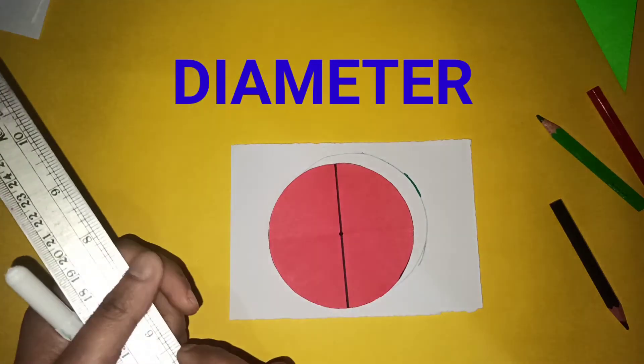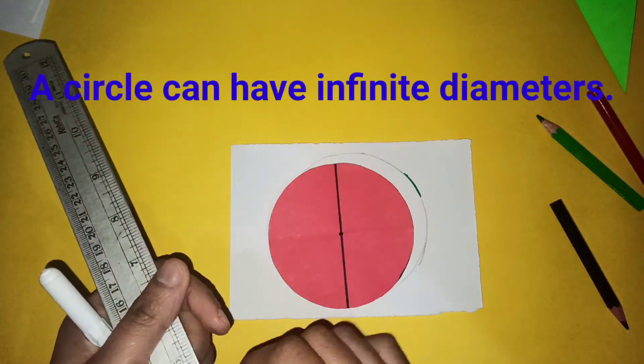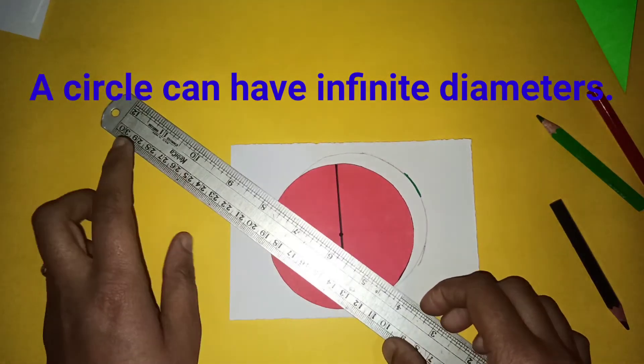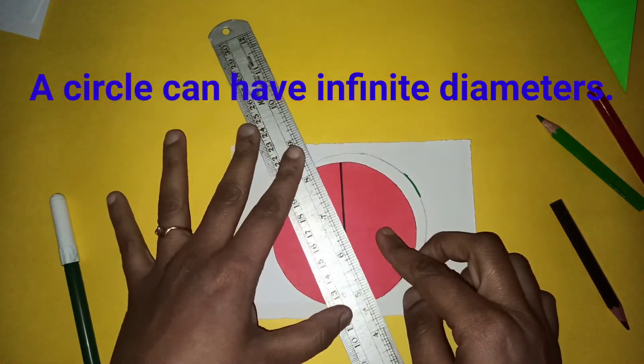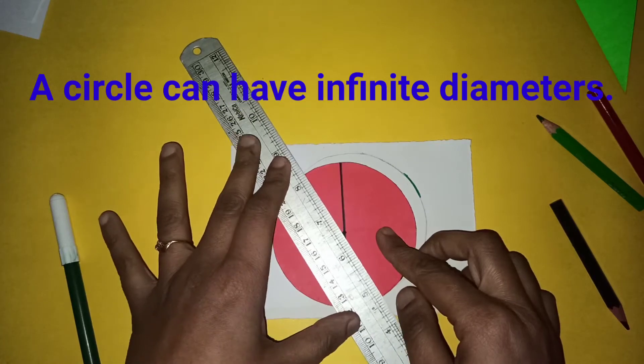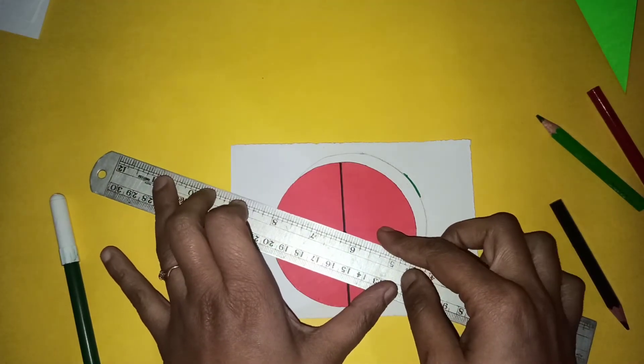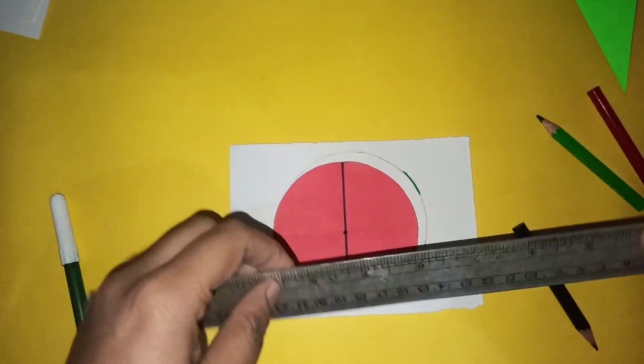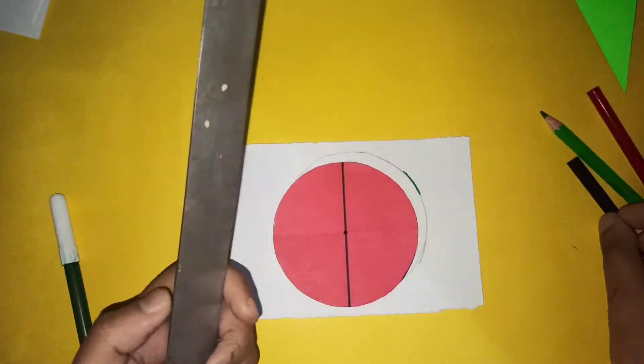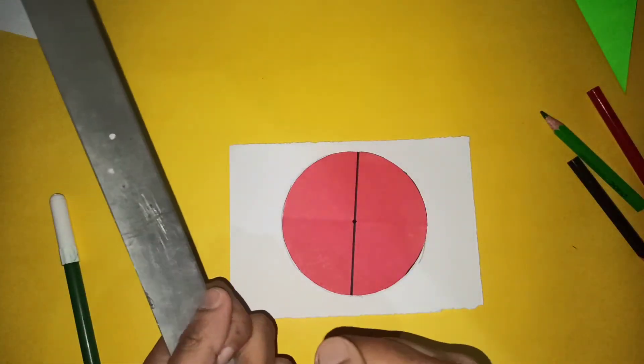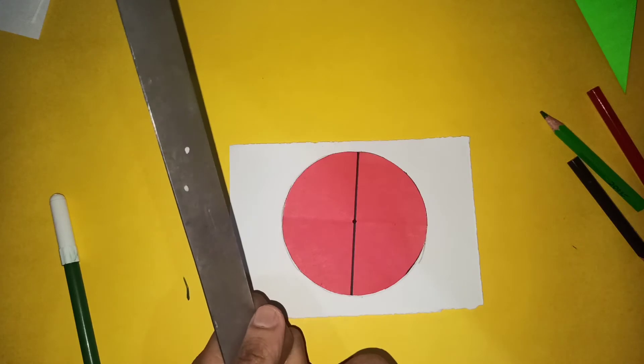Now first, we need to understand that the circle can have infinite diameters. See, I can make as many lines as possible passing through the center of the circle and touching the circumference. I can draw countless lines. So that means there are infinite diameters possible.